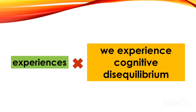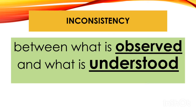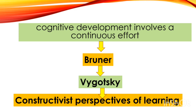When our experiences do not match our schema or cognitive structures, we experience cognitive disequilibrium — meaning there is inconsistency between what is observed and what is understood. We then exert effort through assimilation and accommodation to establish equilibrium once more. In this manner, the guidance of adults is very important to prevent an individual from cognitive disequilibrium. Remember that cognitive development involves continuous effort to adapt to the environment through assimilation and accommodation.